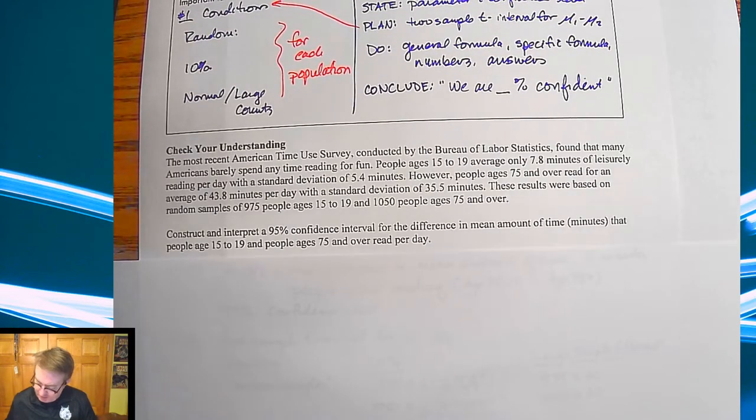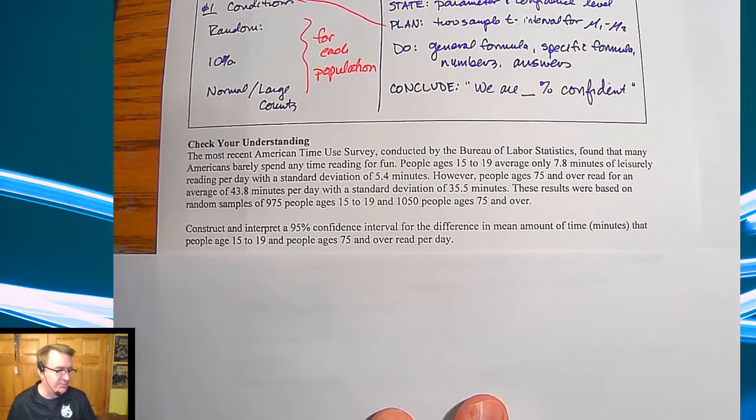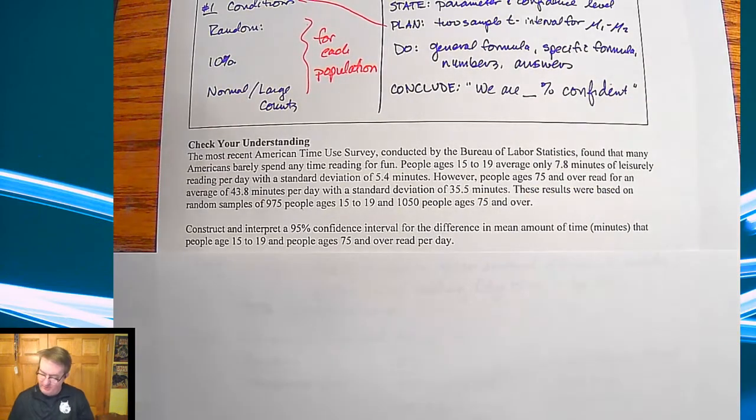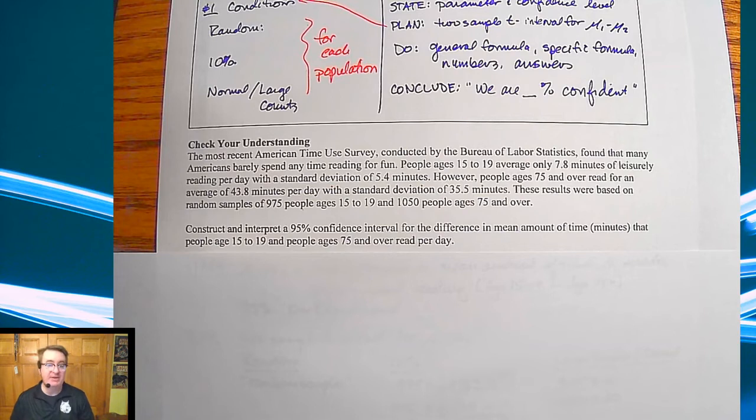For your check for understanding, you are going to double check to see how much time people spend reading between two different age groups. Is there a difference between 15 to 19 year olds and people who are over the age of 75? So go ahead, run through these four steps down here, fill in what you can, and come back and check your work.